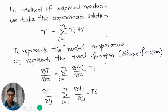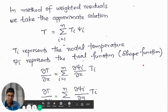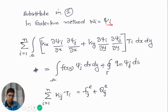The next step is to assume an approximate solution. The temperature T, which is our variable of interest, can be written as: T equals sigma (i=1 to n) Ti * psi_i, where n is the number of nodes in the element, Ti represents the nodal temperatures, and psi_i represents the shape functions. From this, we can find dT/dx equals sigma (i=1 to n) dpsi/dx * Ti, and dT/dy equals sigma (i=1 to n) dpsi/dy * Ti.